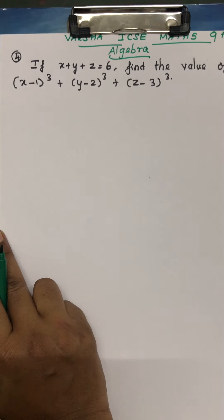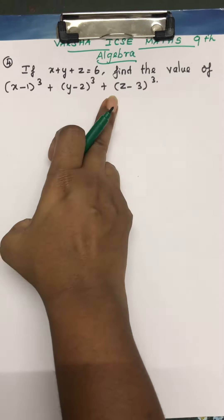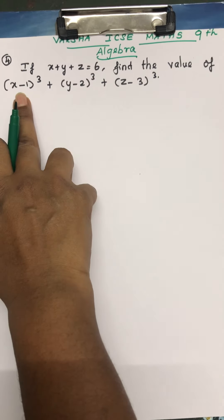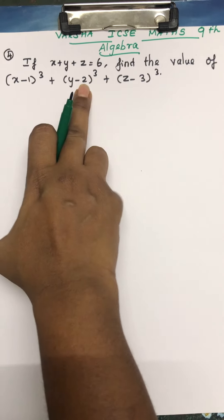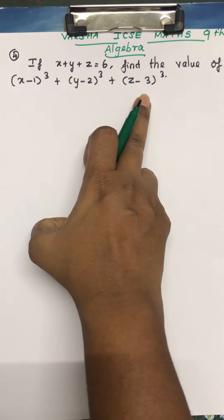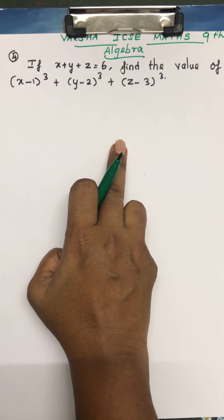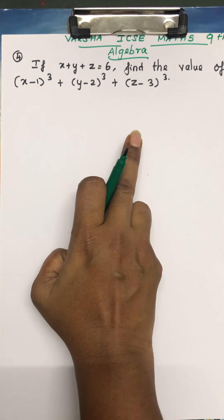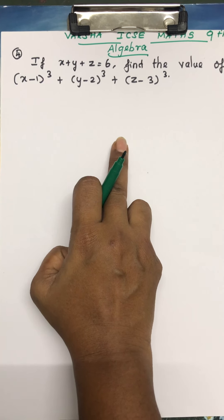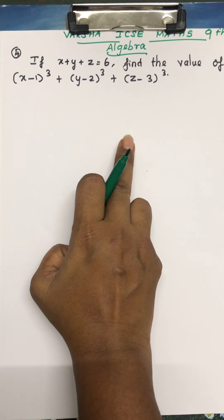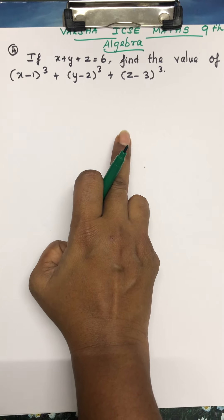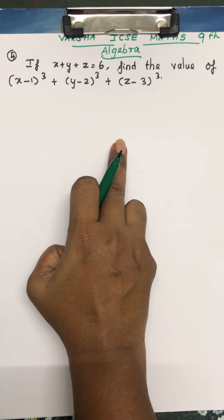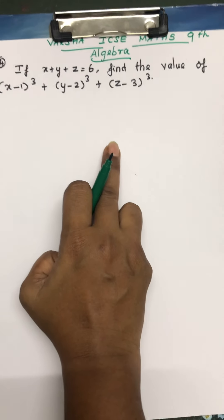We need to find which algebraic identity matches this question. Since we have a cube, b cube, and c cube, there is a perfect identity for this. Algebraic identities are very important to study — if you study them thoroughly, you can solve any sum from the algebra lesson.